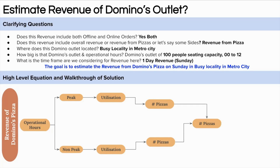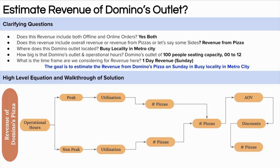Summing up peak and non-peak hours, we calculate the total number of pizzas. From there, we factor in the average value of a pizza — there can be multiple types like small, medium, and large, which we could bifurcate into, but for simplicity I am assuming an average order value. After that, we account for Domino's discount coupon codes, and then we have our daily revenue from Domino's pizza. I hope you understand the high-level approach. Now let's start putting in the numbers.